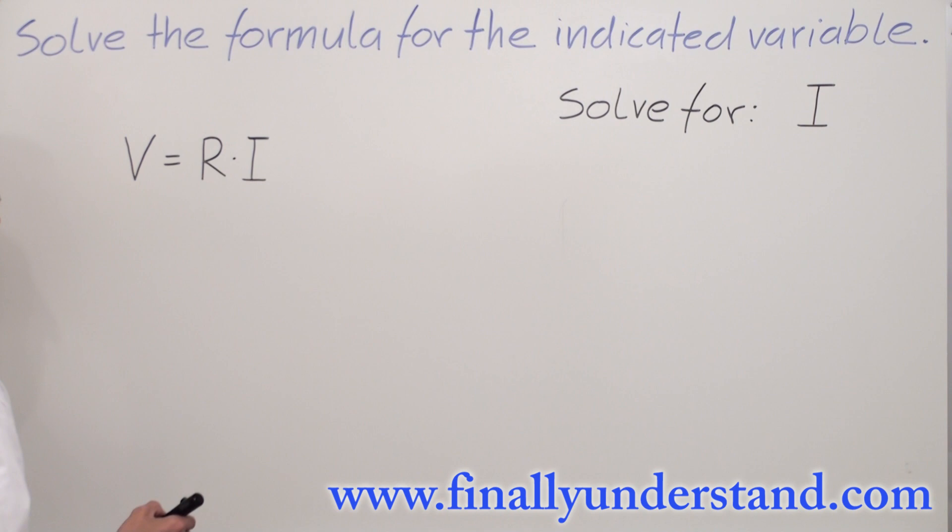Also, we said that anytime we want to eliminate multiplication, we have to use division. And always we have to divide both sides of the equation by the variable which is next to the one which I'm looking for. This time I have to divide both sides of the equation by R.